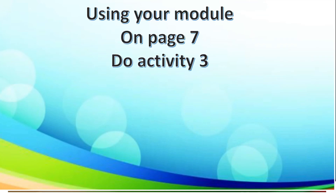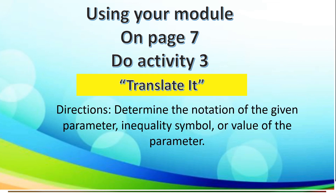For your activity, using your module on page 7, do activity number 3. The title is 'Translate It.' The direction states: determine the notation of the given parameter and the equality symbol or value of the parameter.